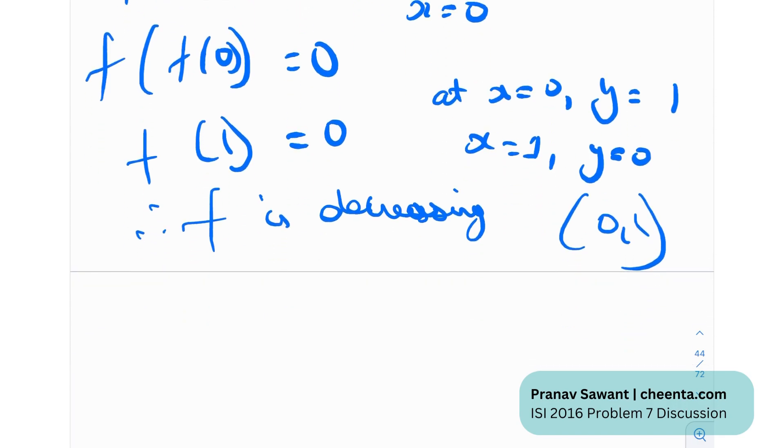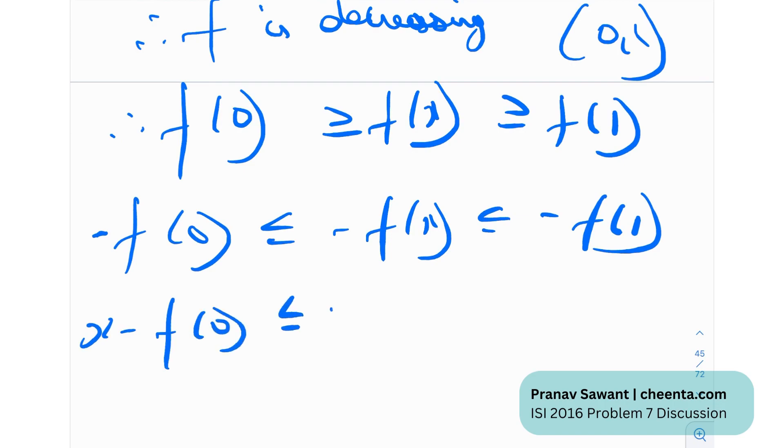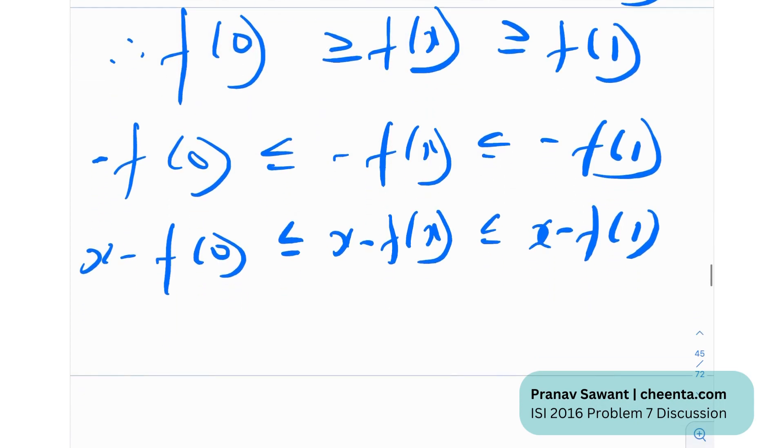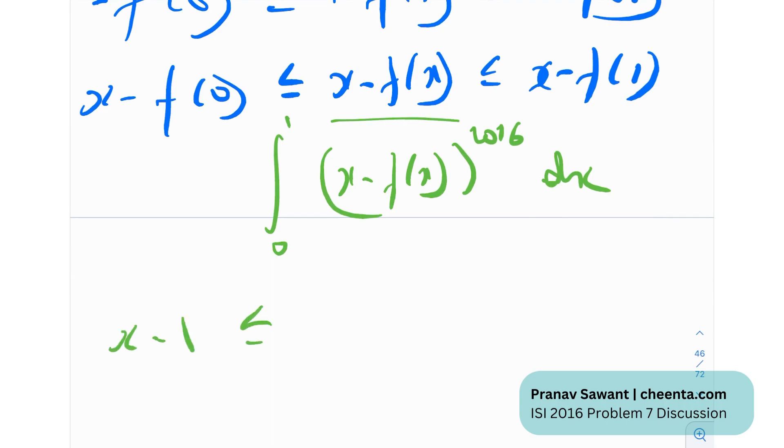I can essentially say that f(0) will be greater than or equal to f(x), which will be greater than or equal to f(1). If I just multiply by negative sign, the sign of the inequality changes. So -f(0) ≤ -f(x) ≤ -f(1). And if I just add x on all of these three terms, I'll get something like this. Why am I doing this? Because essentially we need to find the value of the integral. I'm trying to formulate a term that's similar to this, and we've actually pretty much reached it. So f(0) is 1, less than or equal to x - f(x), less than or equal to x.